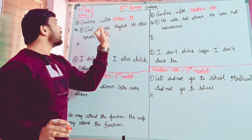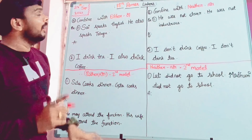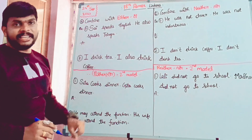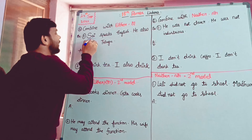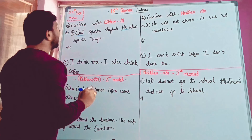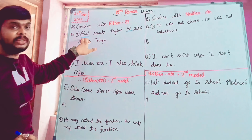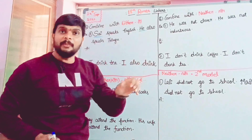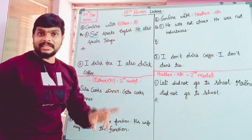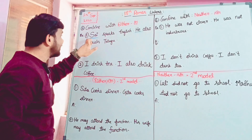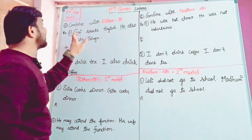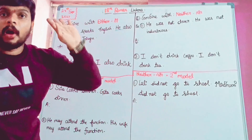Sai speaks English. He also speaks — so how do I combine this question? Two sentences. First sentence subject is Sai, second sentence subject is He. The two sentences are not the same — first sentence subject and second sentence subject are both similar. Both are same. First sentence is subject, second sentence is subject.